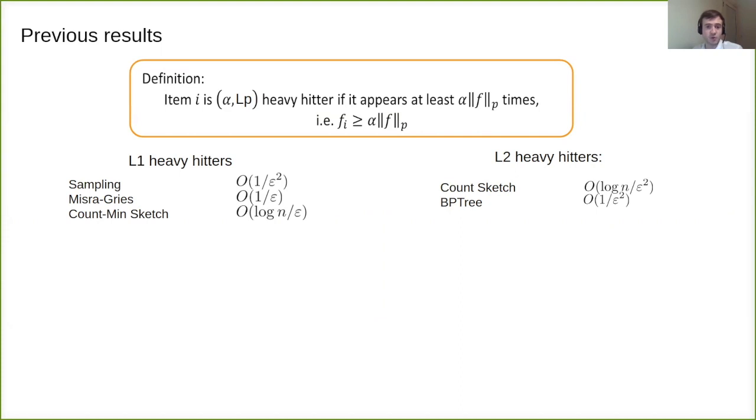Among algorithms for L1 heavy hitters we have sampling, Misra-Gries, Count-Min sketch. For L2 we have Count-Min sketch and BP tree. Note that sampling would require polynomial memory if we want to find L2 heavy hitters. To show that L2 guarantee is much stronger than L1, first we will show two pictures.